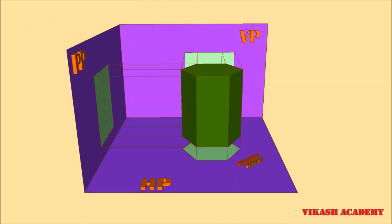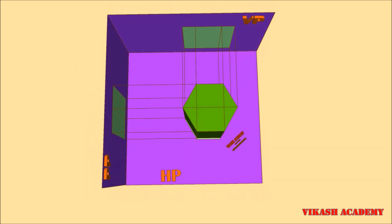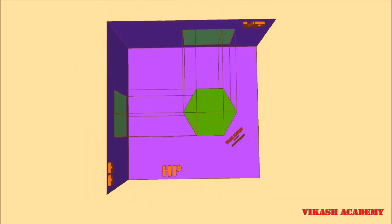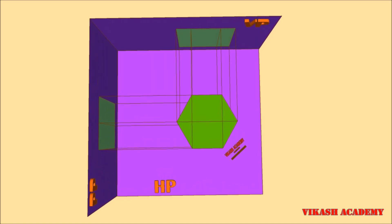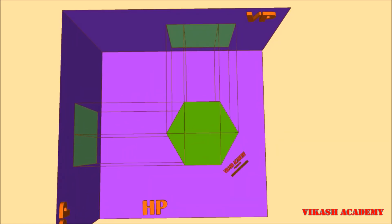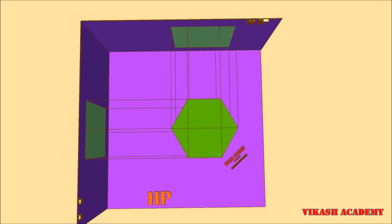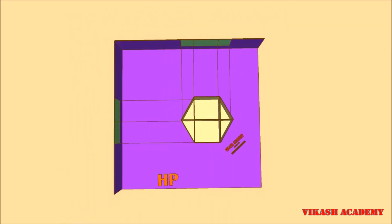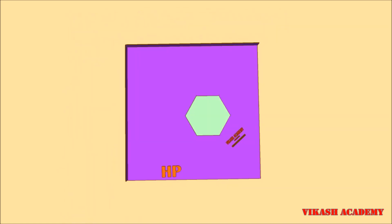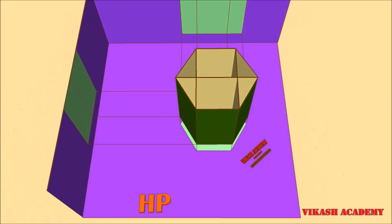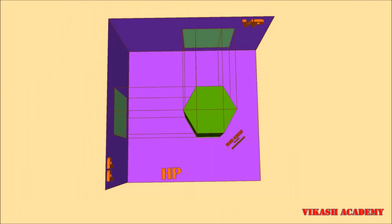When we observe this object from the top, we are going to obtain a hexagon on the horizontal plane, which will be our top view of this hexagonal prism. This is due to the lines projected from the hexagonal base onto the horizontal plane — we obtain some points, and when we join these points we get a hexagon which will be our top view.